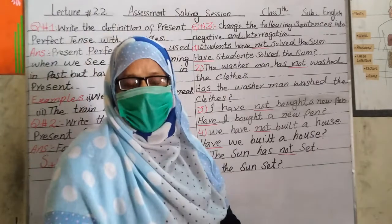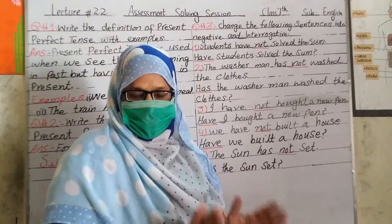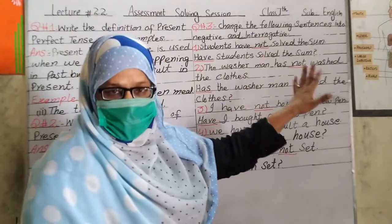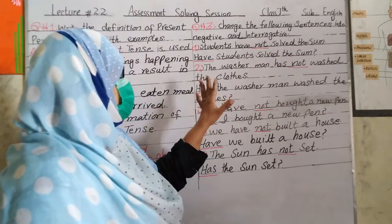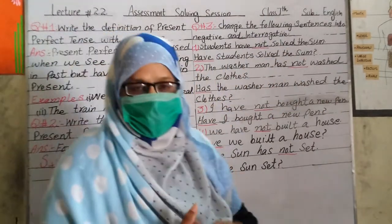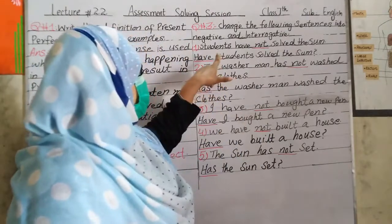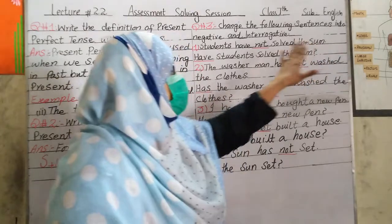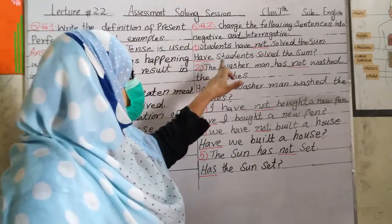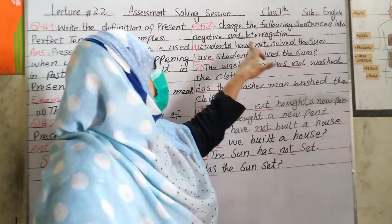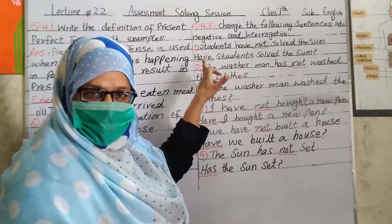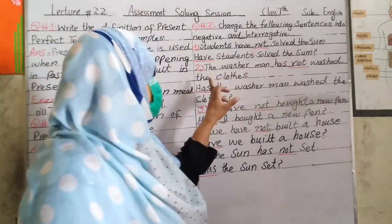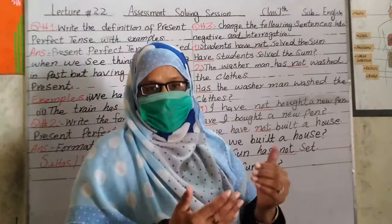Question 3: Change the following sentences into negative and interrogative. The sentences on the sheet are in positive/simple form and we need to change them. First sentence: 'Students have solved the sum.' Negative: 'The students have not solved the sum.' Interrogative: 'Have students solved the sum?' — the helping verb comes to the front.